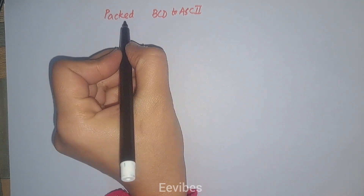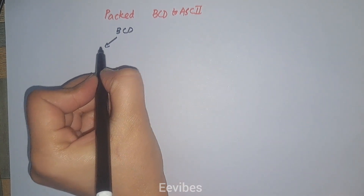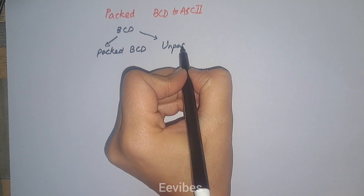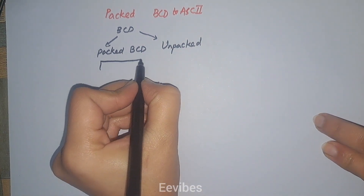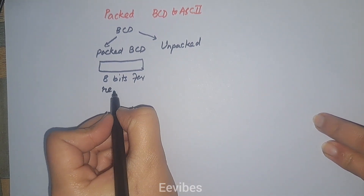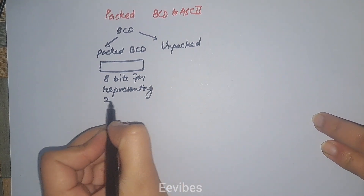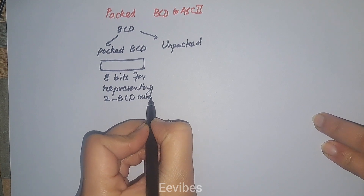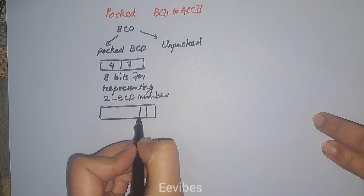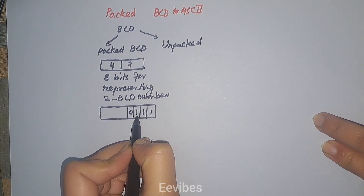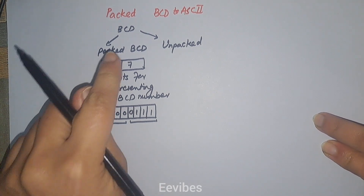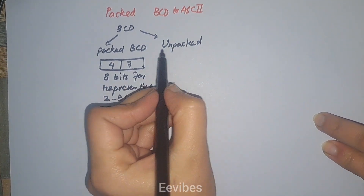The BCD information comes in two formats. The first one is packed BCD and the second one is unpacked BCD. In the packed BCD representation we use eight bits for representing two BCD numbers. For example, 47 hex can be represented with four bits in the lower nibble and four bits in the higher nibble. Each BCD digit can be stored in four bits.